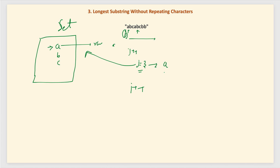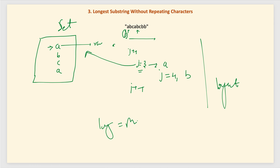Then j moves to 4 and we get 'b' again, and 'a' is re-added to the set. We keep adding and removing using the two pointers. Whenever we do not find the current character in the set, we update our longest length by taking the max of the previous longest or the new window size j minus i.